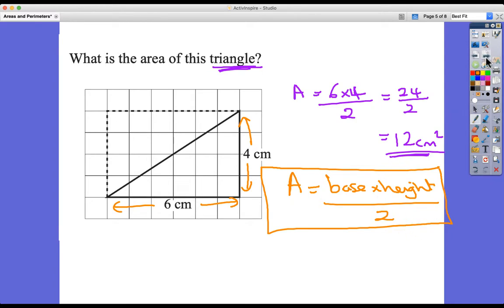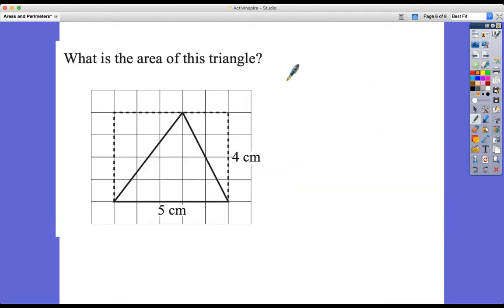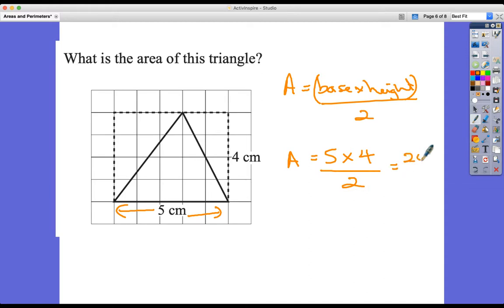Let's look at another example. We're going to use the same formula for the next one. So, again, area equals base times by height divided by two. Now, in this case, what's the base? The base length is five centimeters. What's the height? The height is four centimeters. And then we're going to divide it by two. So it's 20 divided by two, which is 10 centimeters squared.